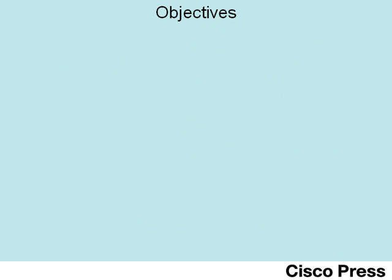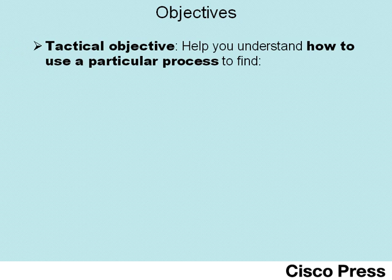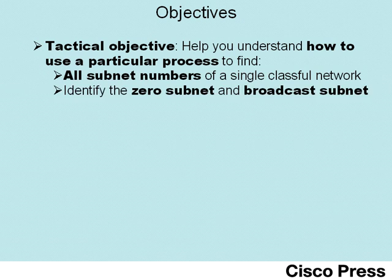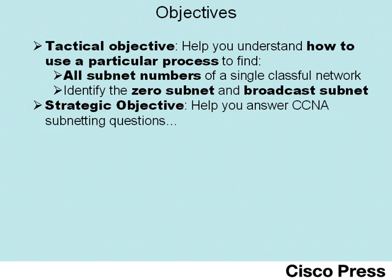This video focuses on a particular process to find a few things about a network number. In particular, this process shows how to find all the subnet numbers of a single classful network, as well as identifying the two subnets that are special — the zero subnet and the broadcast subnet. A broader goal is to help you answer CCNA subnetting questions quickly and with confidence.